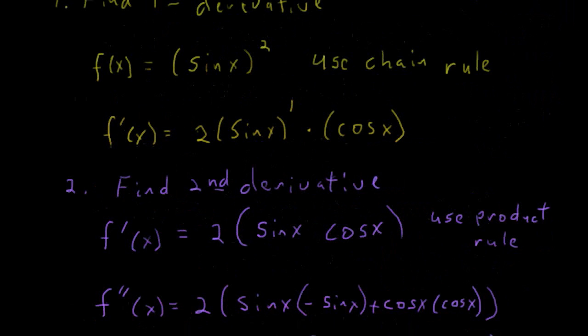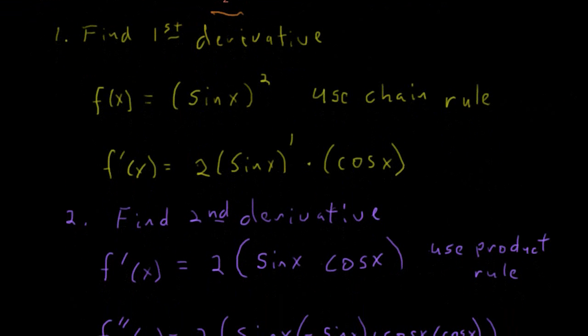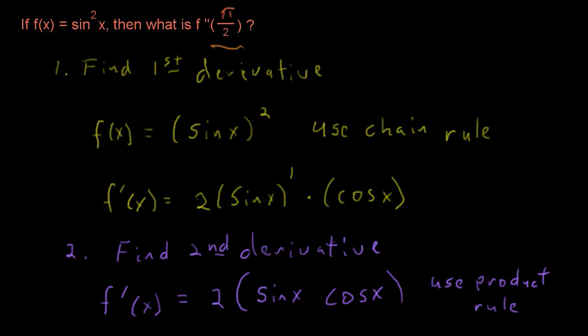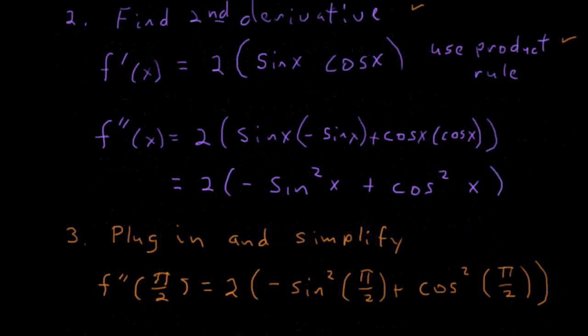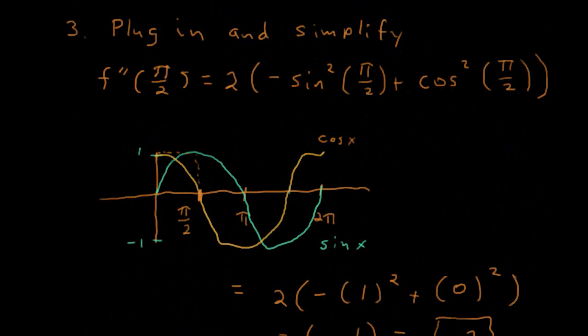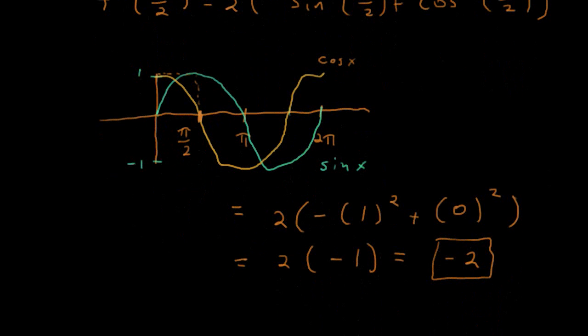Let's recap: we wanted to find the value of the second derivative, so first we found the first derivative using the chain rule, which gave us a product. To find the second derivative we needed the product rule. After that, we plugged in pi over 2 and found that the value of the second derivative is negative 2.